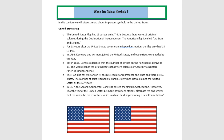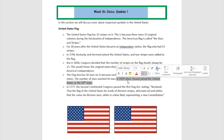The flag also has 50 stars on it, and each star represents each state. The last state to join the United States was Hawaii in 1959.